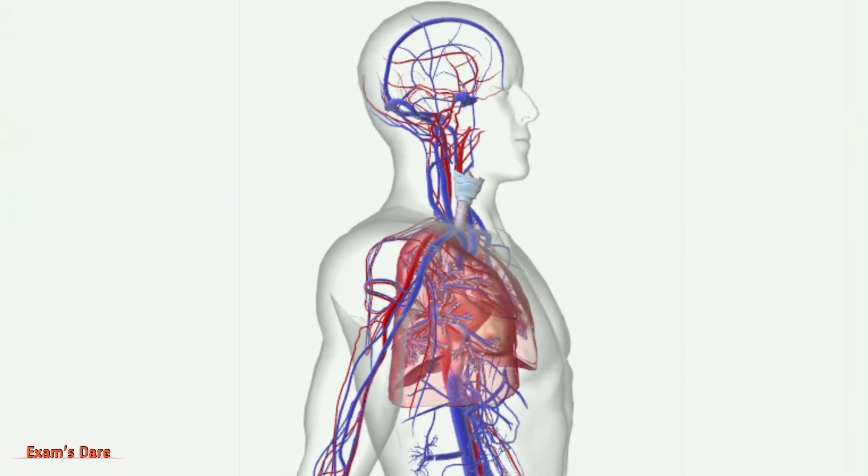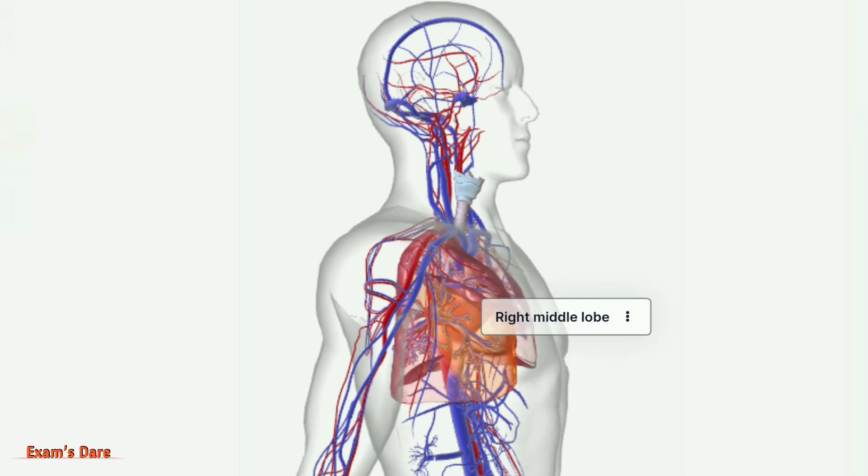The upper lobe is called the right superior lobe. The middle lobe is called the right middle lobe, and the lower lobe is called the right inferior lobe.